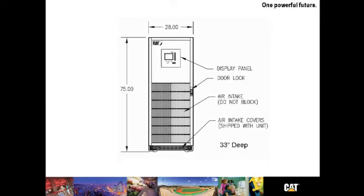The UPS-B130 is 75 inches tall, 28 inches wide, has a very large HMI interface. You'll notice the grates at the bottom, the air intake covers. This unit is also 33 inches deep.